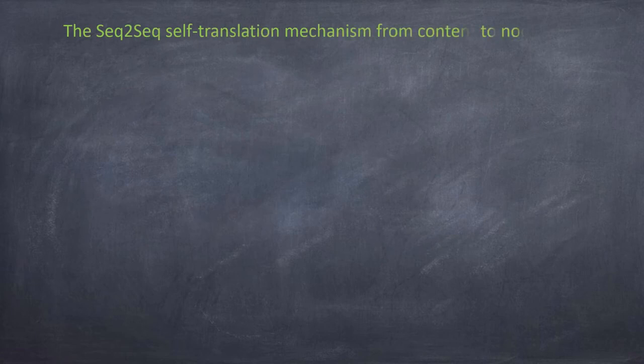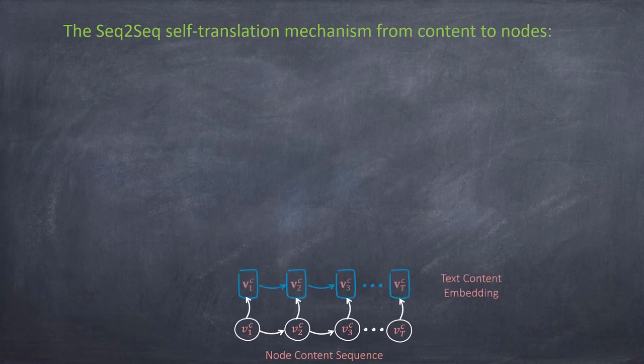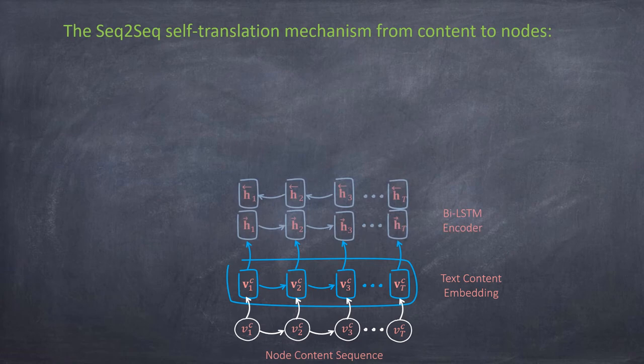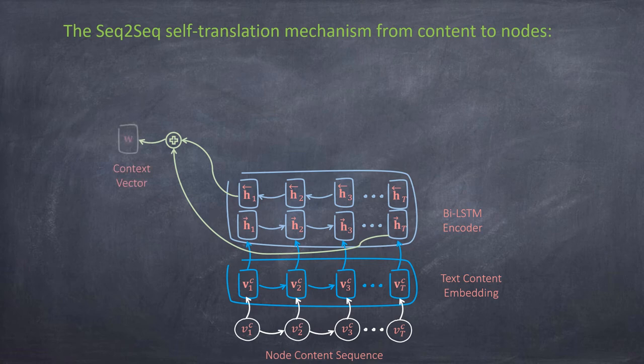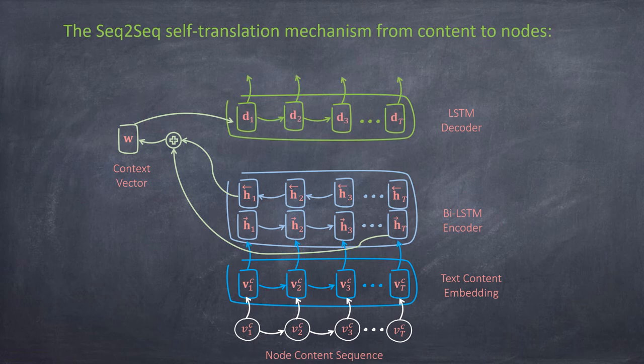The sequence-to-sequence translation mechanism is as follows. First, the node content sequence is represented as an embedding sequence, and then sent into the bidirectional LSTM layers. The final hidden vectors of the forward and backward LSTMs are concatenated. Finally, the LSTM decoder layer decodes the context vectors into the node identity sequence.